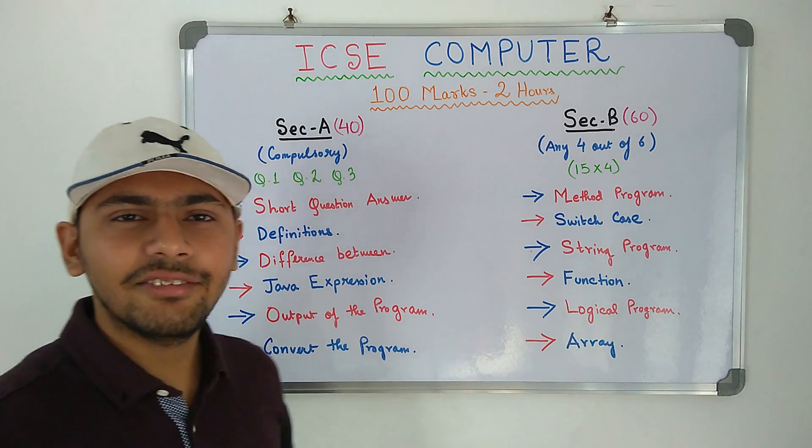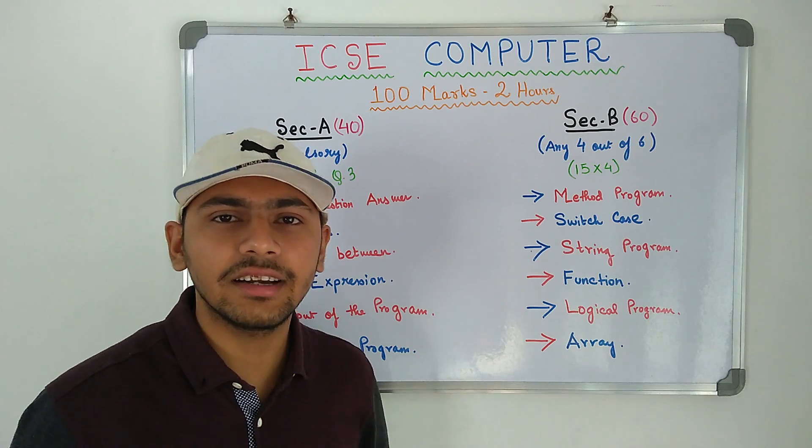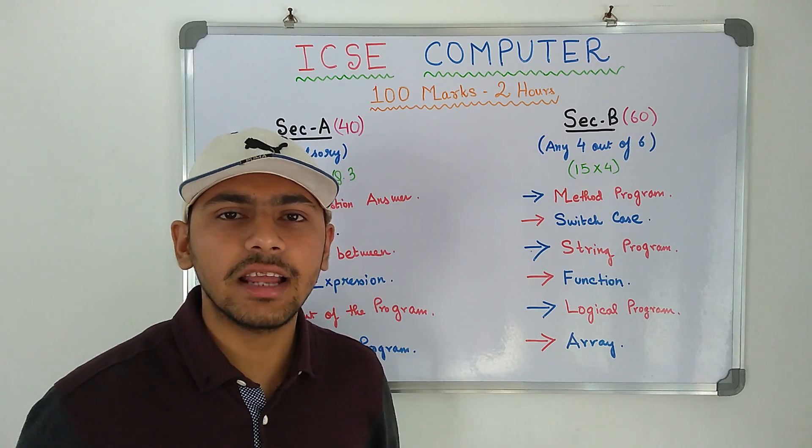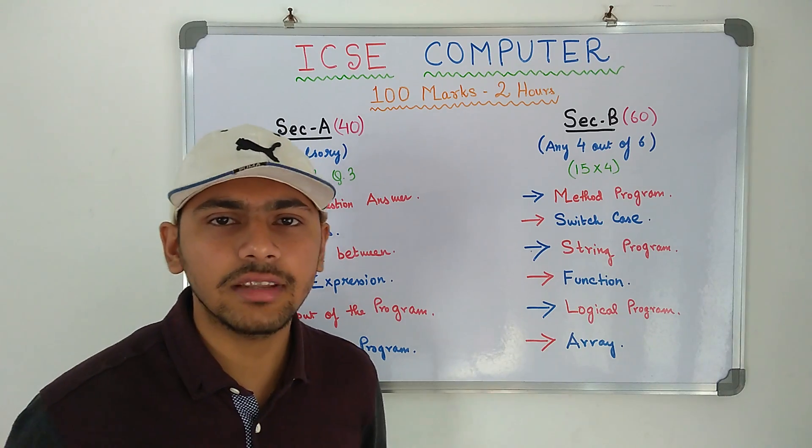Then you have definitions. Definitions are really important in this question paper. A lot of definitions are asked like Define Abstraction, Define Encapsulation, Define Inheritance, Define Class, Define An Object and things of that sort.